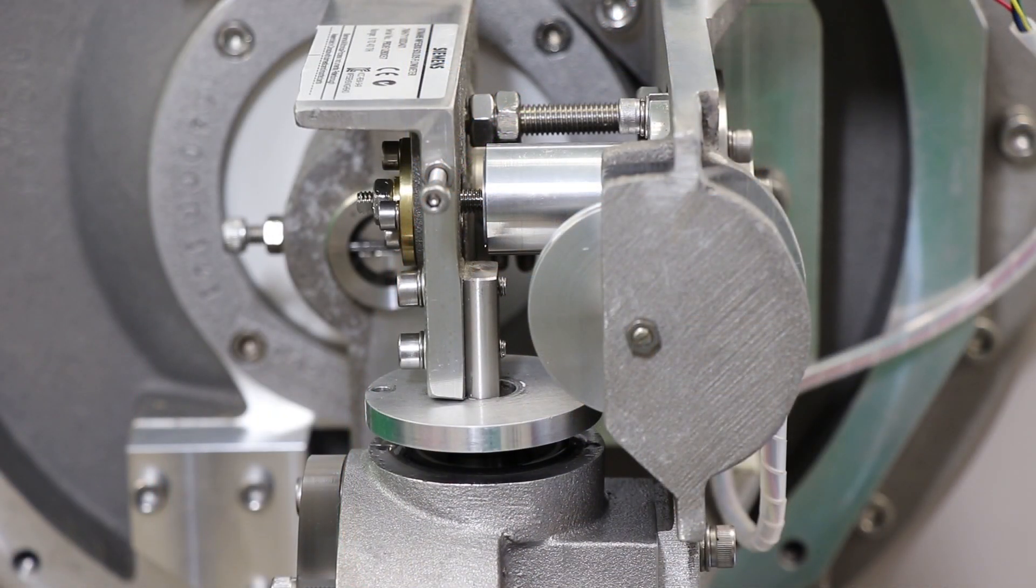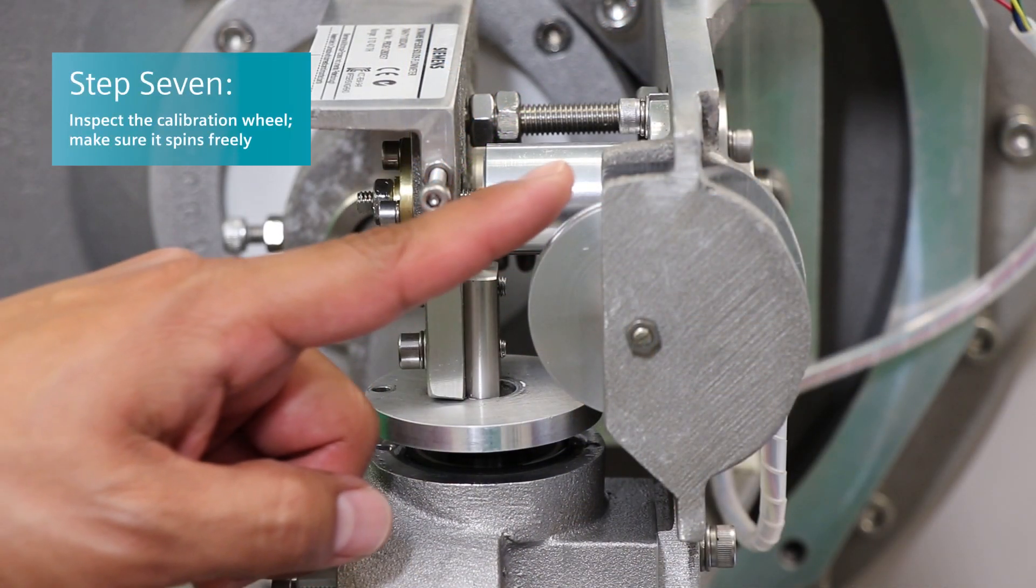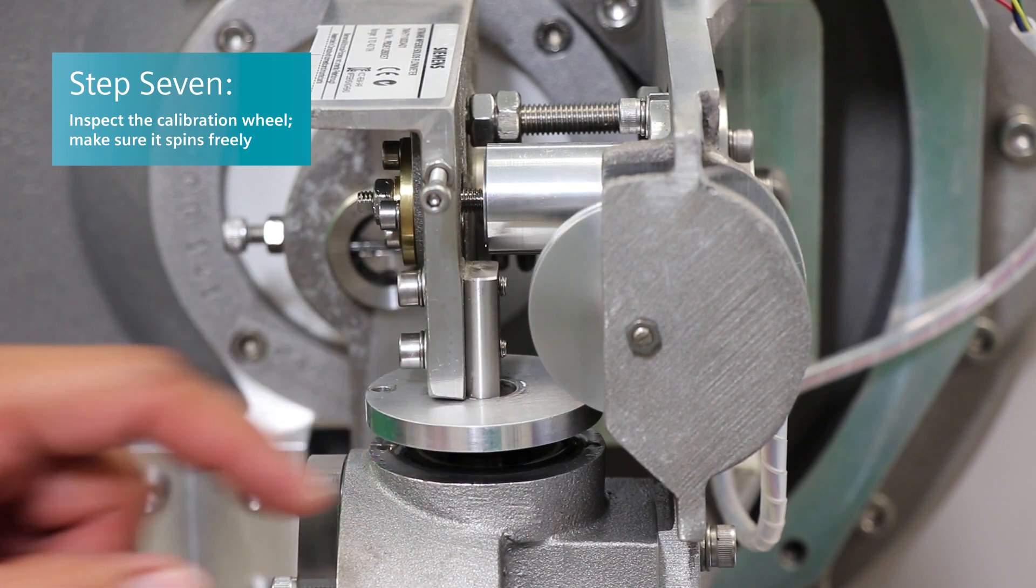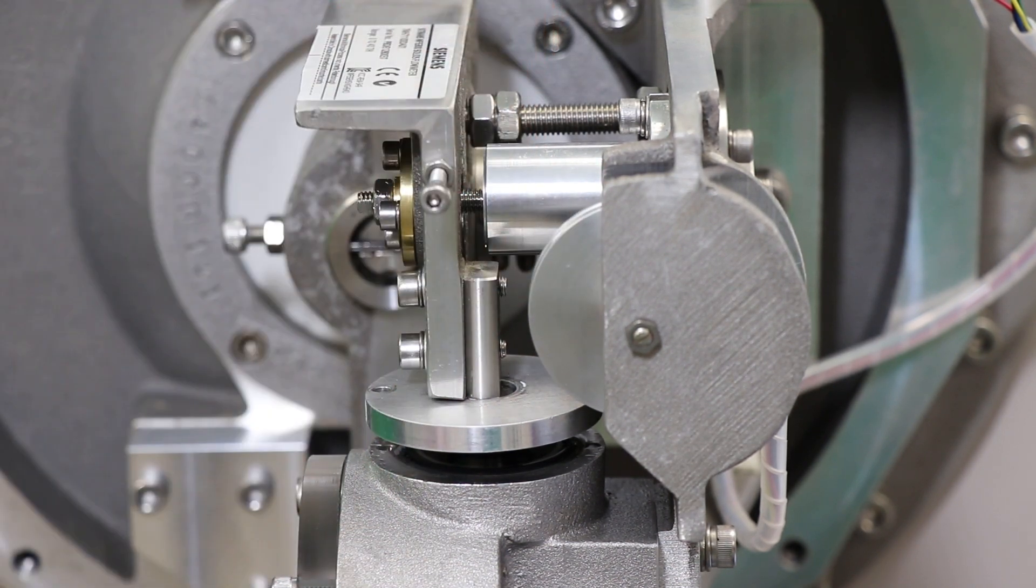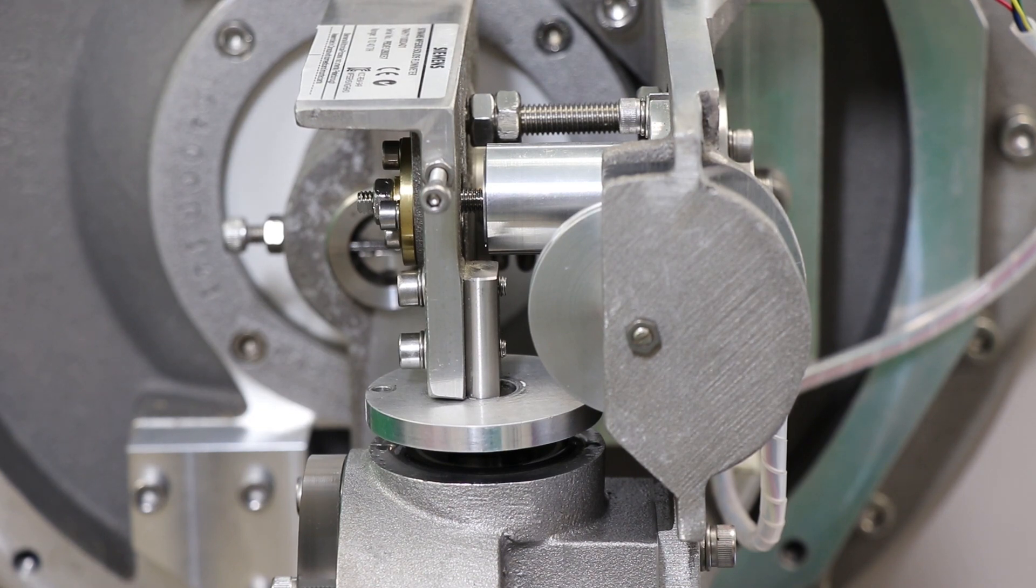The last thing that we will inspect is the calibration wheel. Make sure it spins freely and it is not loose. Now we've done all of the inspection, we will move on to the calibration.